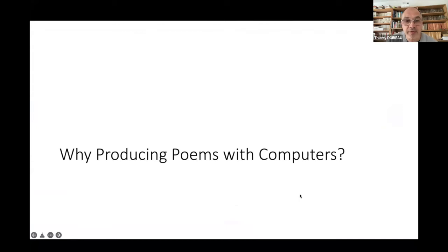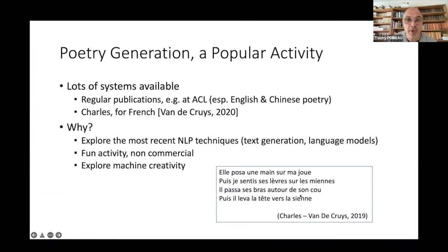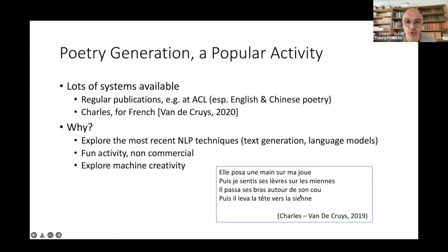The first thing we can ask is why do we want to produce poems with computers? If you look online, you'll see that it's a very popular activity. There are lots of systems available. It's not just a hobby, because lots of people are publishing in the best conferences. In my domain, computational linguistics, that's at ACL. You can see very frequent publications on this topic, even on Chinese or French systems. It's a way to expose the most recent NLP techniques, but it's also a fun and non-commercial activity, whereas most of NLP is now driven by commercial products. And it's also a way to explore machine creativity.